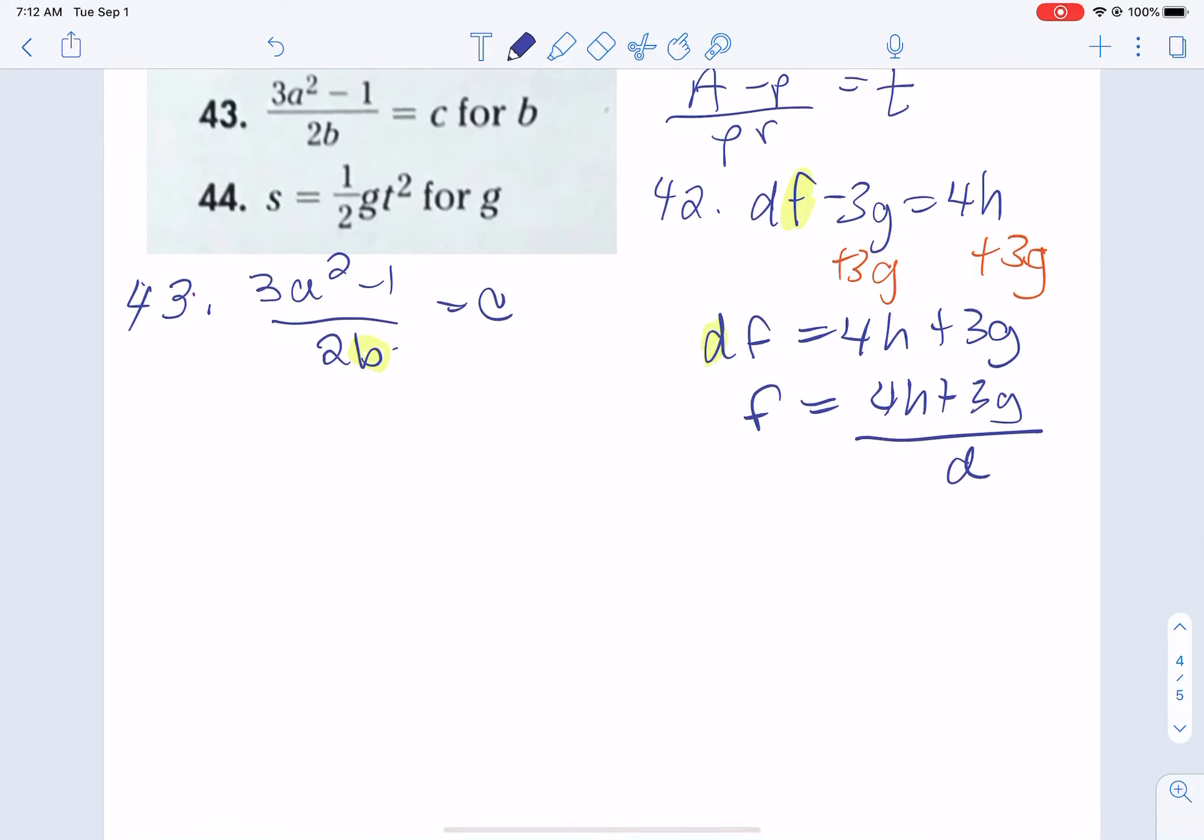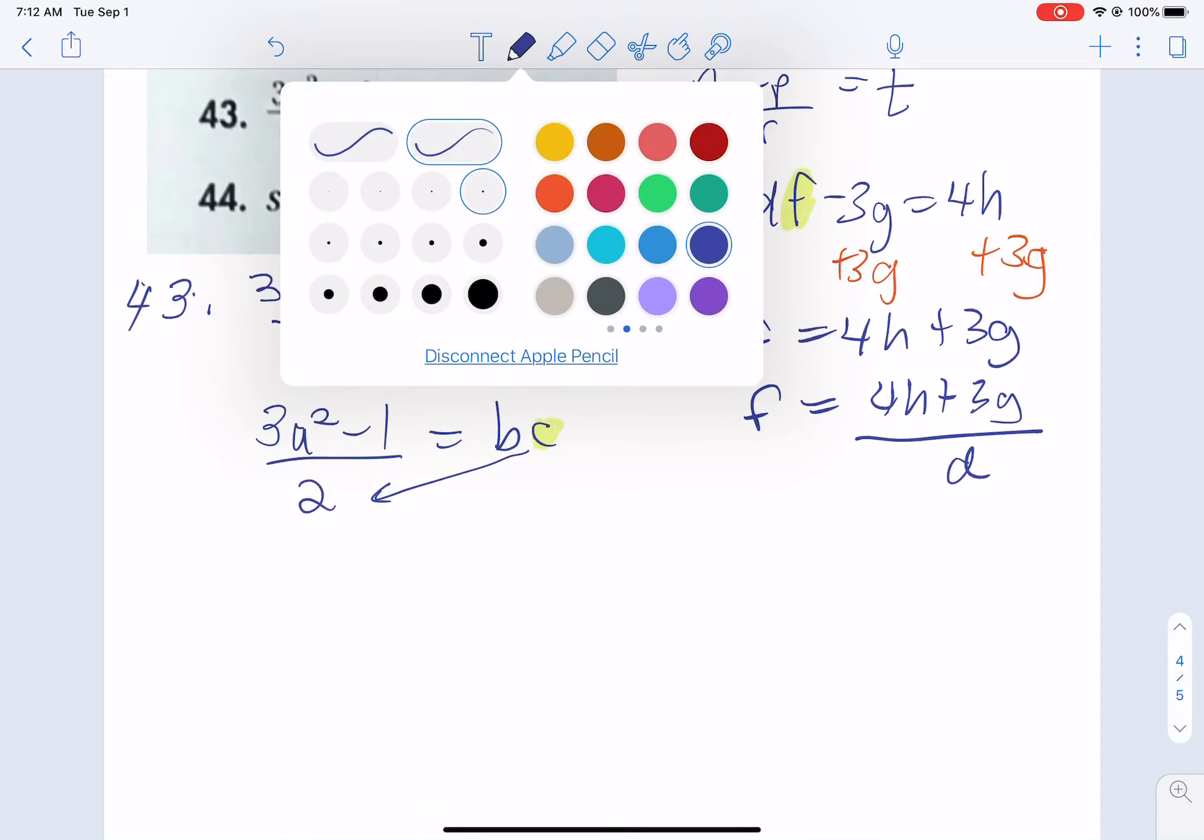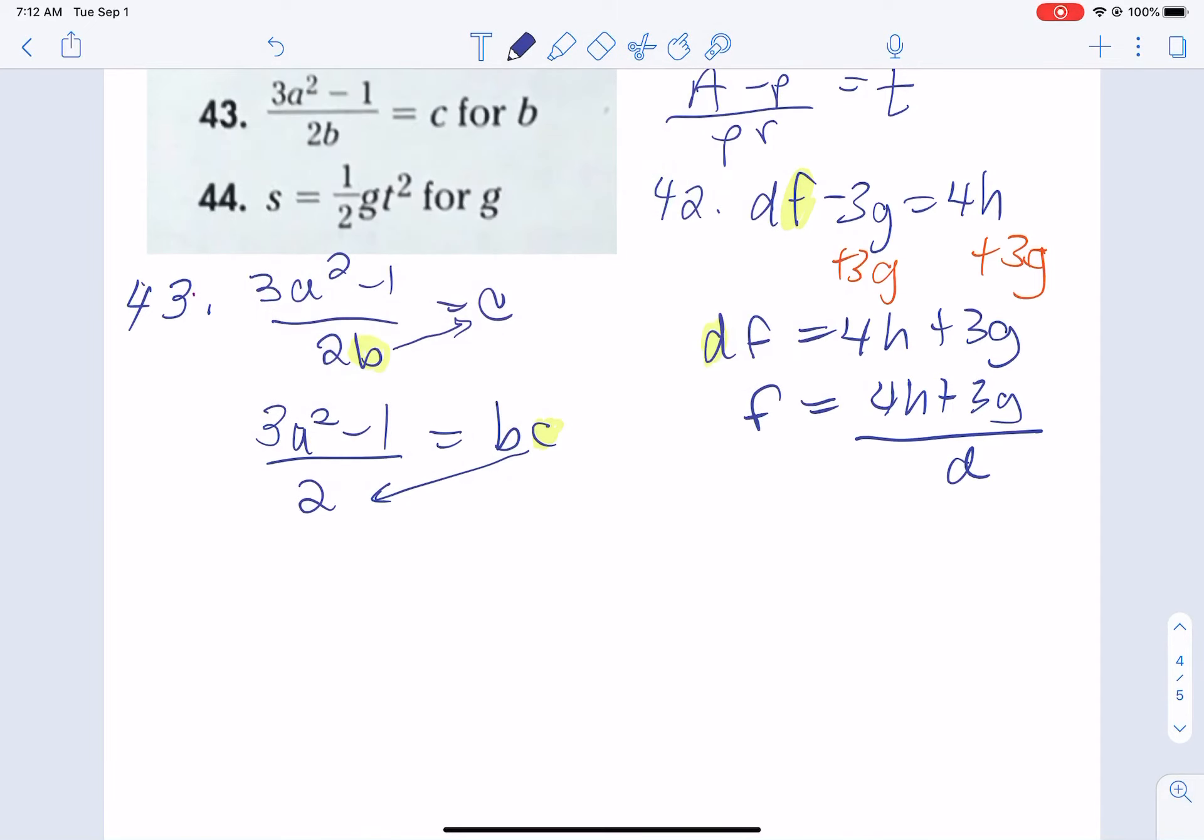So we're allowed to cross multiply this over there. And then we can cross multiply this over there. Now, the only reason we can do that is because this is set up like a proportion.